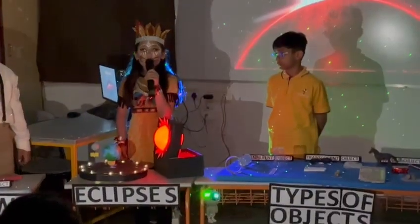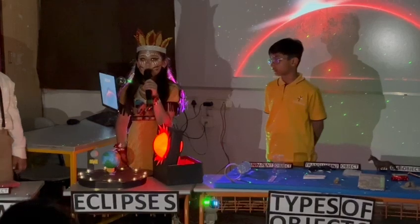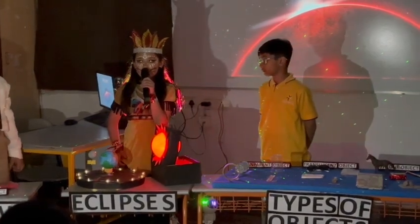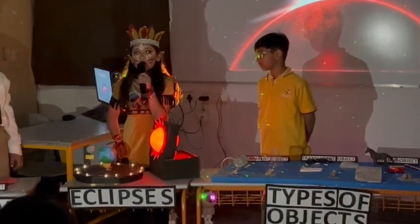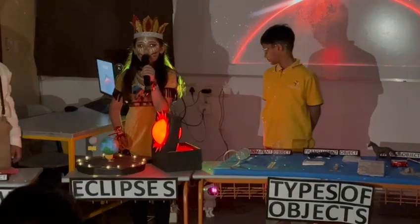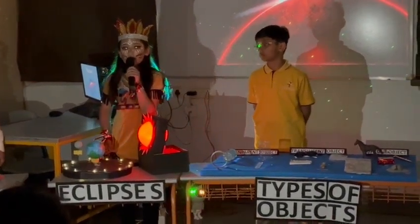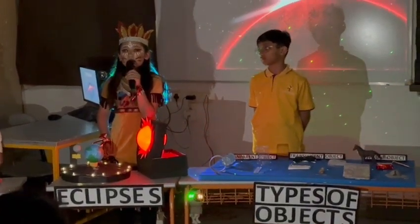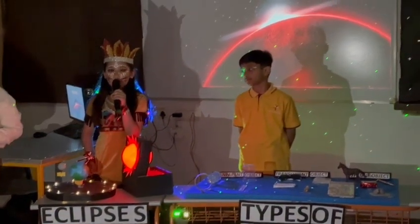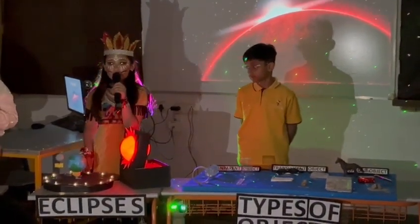Solar eclipse. When the moon comes directly in between the earth and the sun, this causes a shadow of the moon to fall on certain places on the earth. As a result, these places cannot see a part of the sun. This is called a solar eclipse.